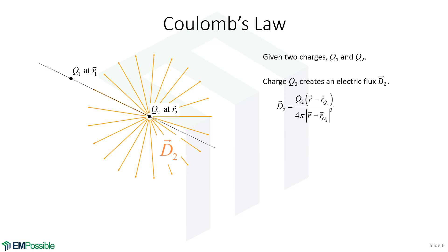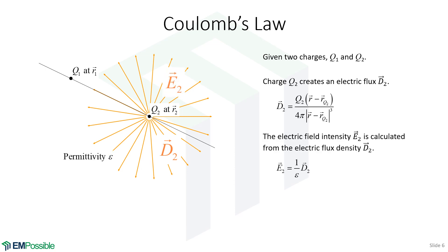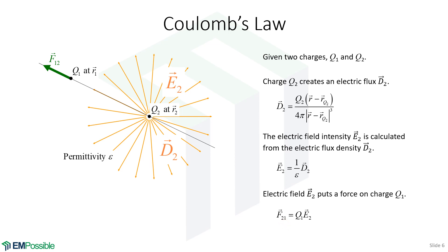Since we're interested in the force on Q1 and that involves electric field intensity, we have to calculate the electric field intensity from the electric flux density. So E2 — the electric field intensity due to the second charge — is simply the electric flux density D2 divided by the permittivity. Then the force on the first charge due to the electric field from the second charge is F21. Notice the subscript convention: 21 means the force due to charge two onto charge one. We take our expression for D2, plug it into the second equation, and then take that expression for E2 and plug it in — and we arrive at Coulomb's law.